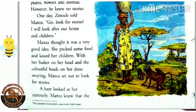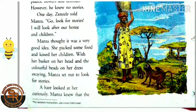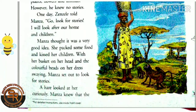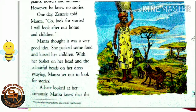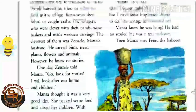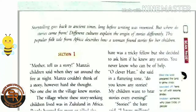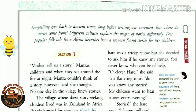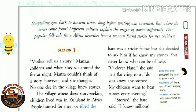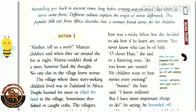She packed some food and kissed her children. With her basket on her head and the colorful beads on her dress swinging, Manza set out to look for stories. A hare looked at her curiously. Manza knew that the hare was a tricky fellow, but she decided to ask him if he knew any stories — you never know who can be of help.